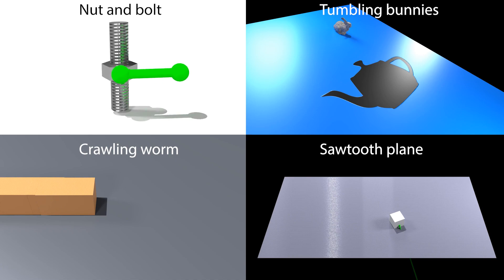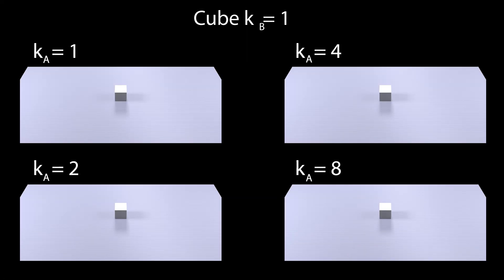Effectively, we couple the visual appearance of surface roughness to the friction model. Our model allows for strong visual consistency with the rendered surface. As such, friction forces increase with surface roughness, as well as displaying anisotropic and asymmetric behavior when appropriate.